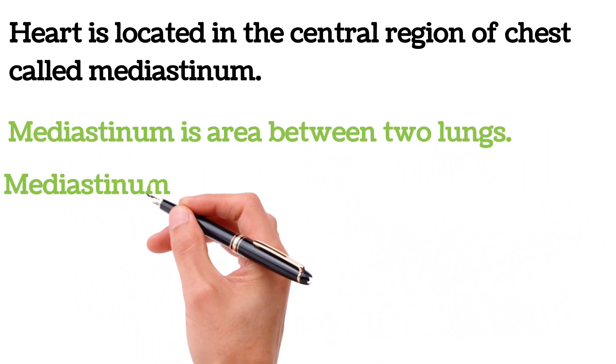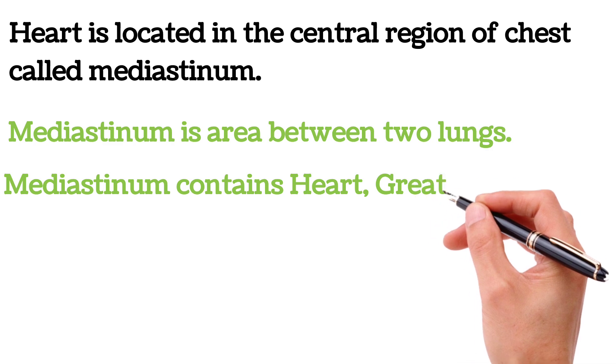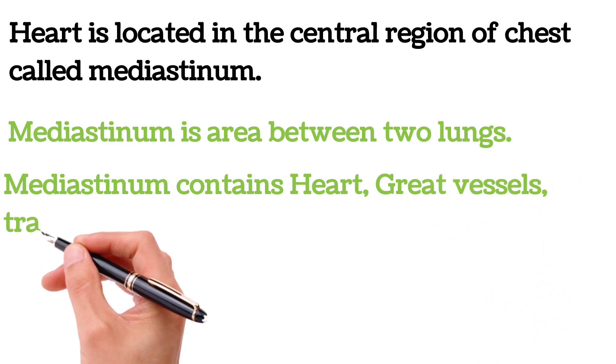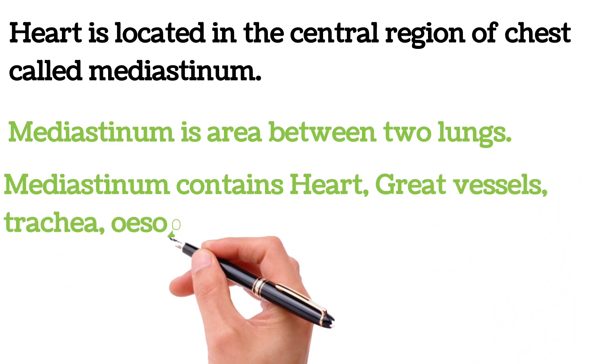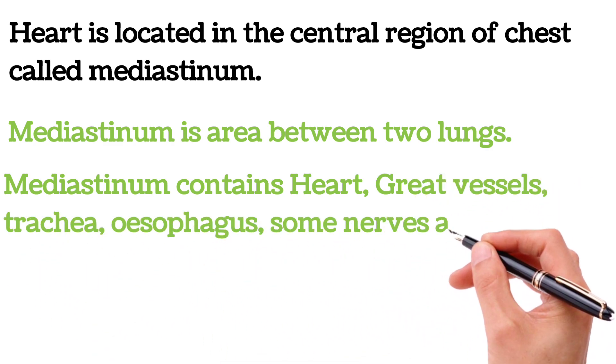The mediastinum is the area or space between the two lungs. It contains several structures like the heart, great vessels, trachea, esophagus, some nerves, and lymph vessels.